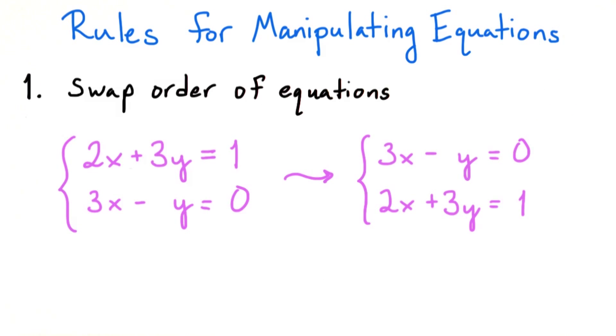First of all, it's certainly legal at any time to swap the order of two equations in the system. Since intersections of planes don't depend on the order in which we list them, this is perfectly fine. We don't change our solution set at all. Also, we can easily undo this operation, just by swapping the two equations back to their original order.